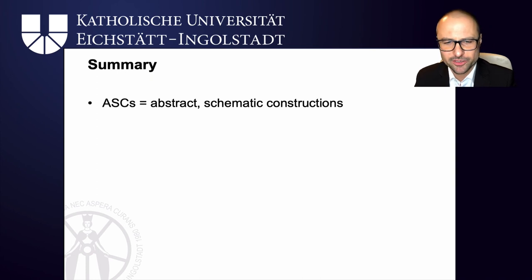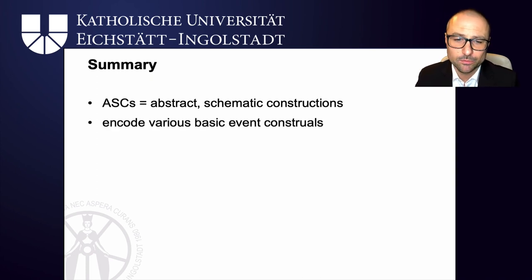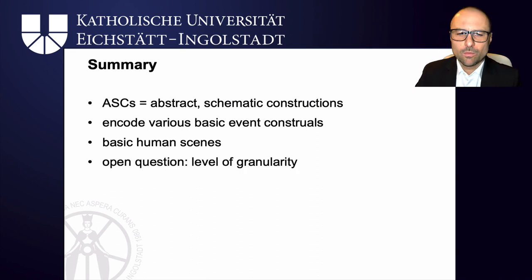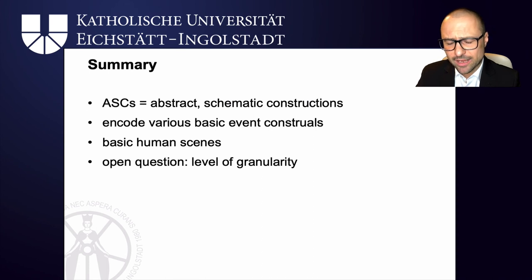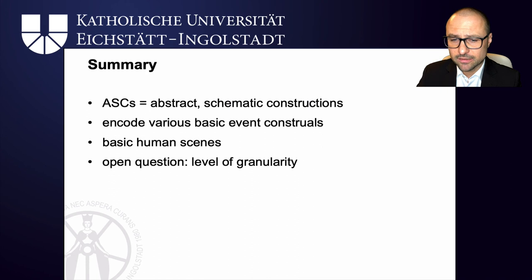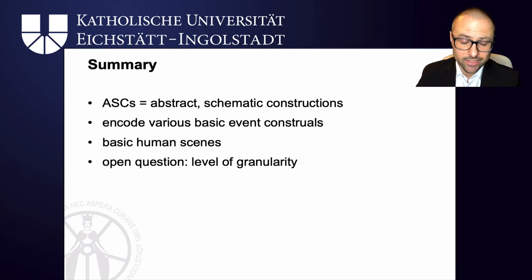Summing up: argument structure constructions are abstract schematic constructions that encode basic human scenes — basic event construals. You come across basic human scenes and we have various ways of looking at them; even the same scene, such as someone loading a truck with boxes, can be construed using different argument structure constructions depending on how you look at it. One important open question still concerns the level of granularity: how abstract do these argument structure constructions have to be, and how many verb-class-specific and verb-specific constructions do we need to account for the idiosyncratic behaviour sometimes displayed by the interaction of verbs and argument structure constructions? There is also still the interaction of the verbal frame, the participants, as well as the force dynamic nature of a verb with the argument structure construction.